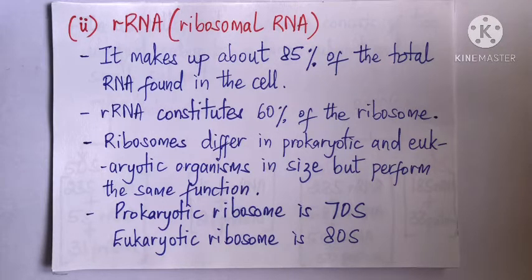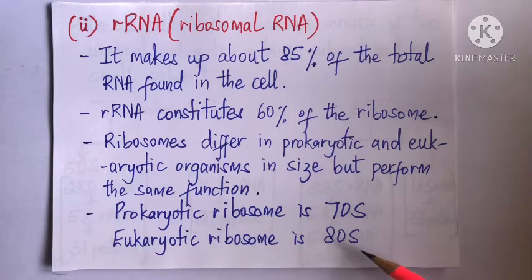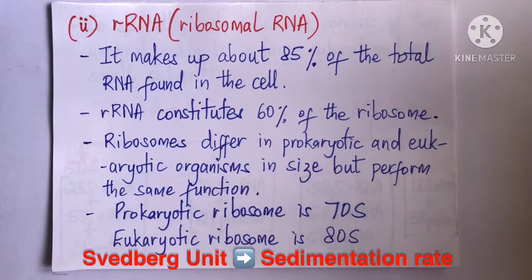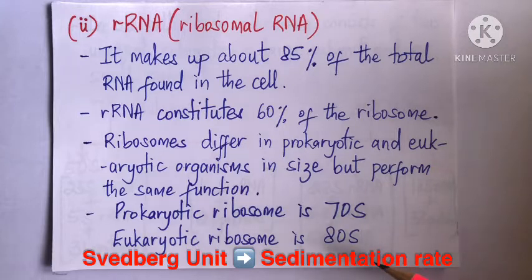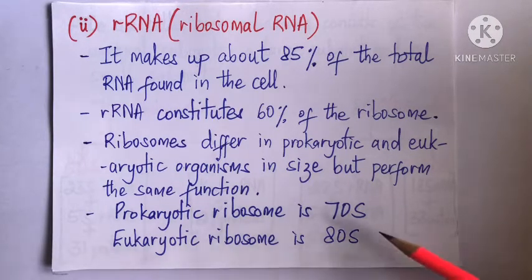Despite their similar functions, ribosomes in prokaryotic and eukaryotic organisms differ in their size. Prokaryotic ribosomes are 70S and eukaryotic ribosomes are 80S. S here stands for Svedberg unit, which is a measure of sedimentation rate. The 80S eukaryotic ribosome sediments faster than the 70S prokaryotic ribosome because 80S is heavier than 70S.